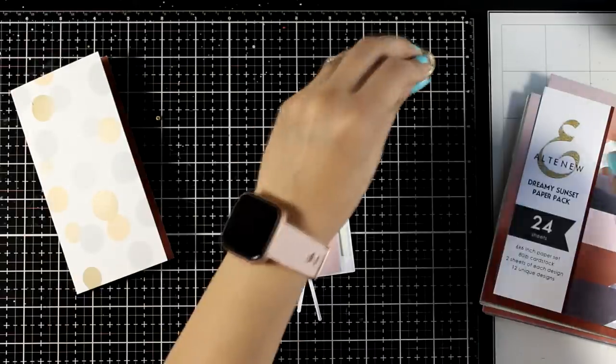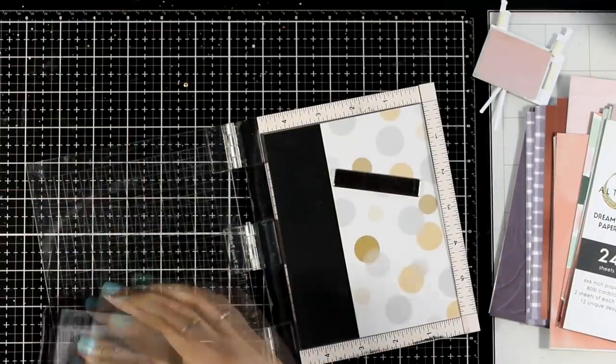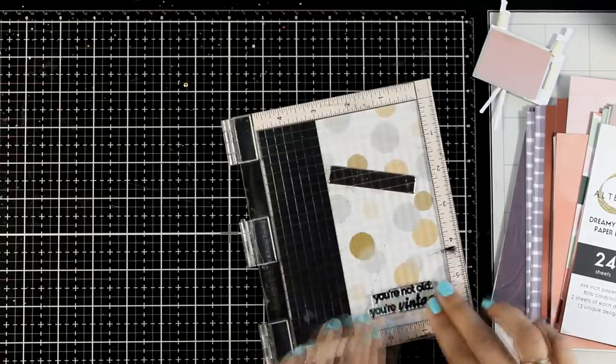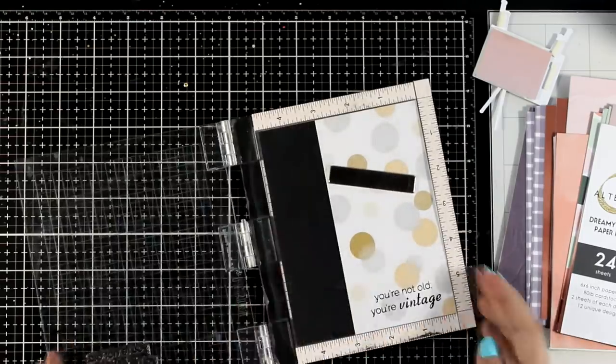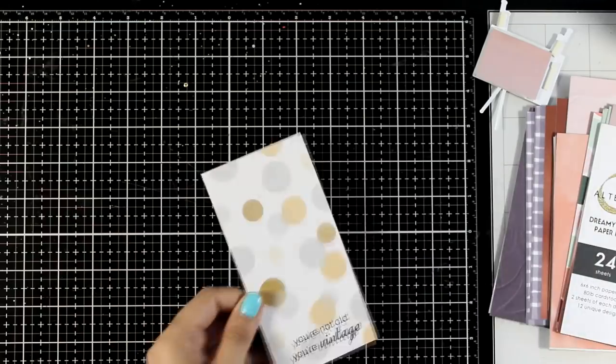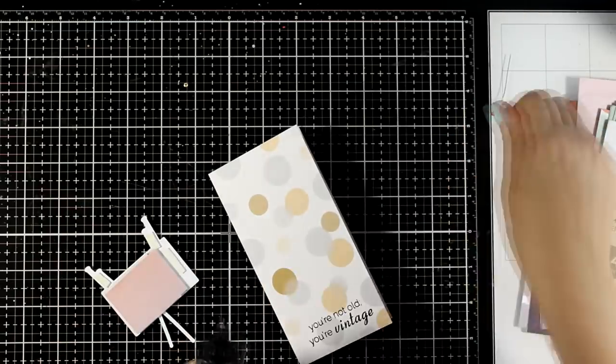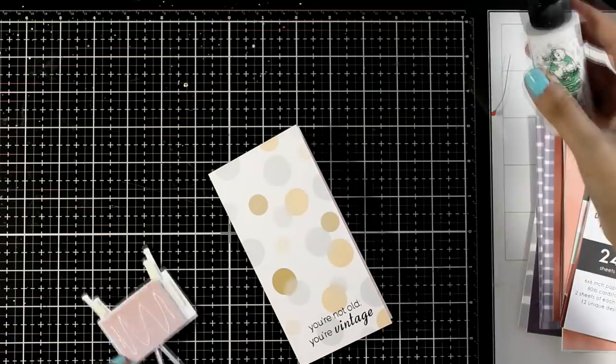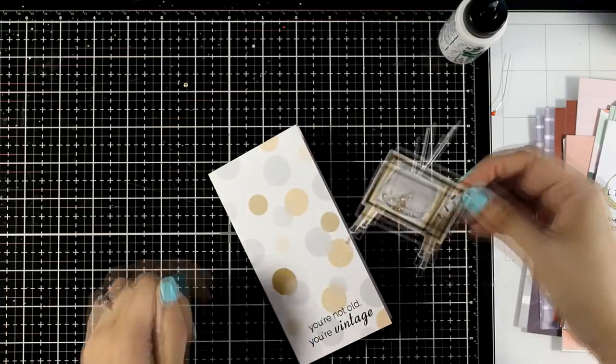As a background for my TV set I did use a piece of pattern paper from the same paper pad. I am also going to just stamp the sentiment directly on my card base and I went with the one that says you are not old, you are vintage. I think this is a very fun card and it would work as a masculine card as well.